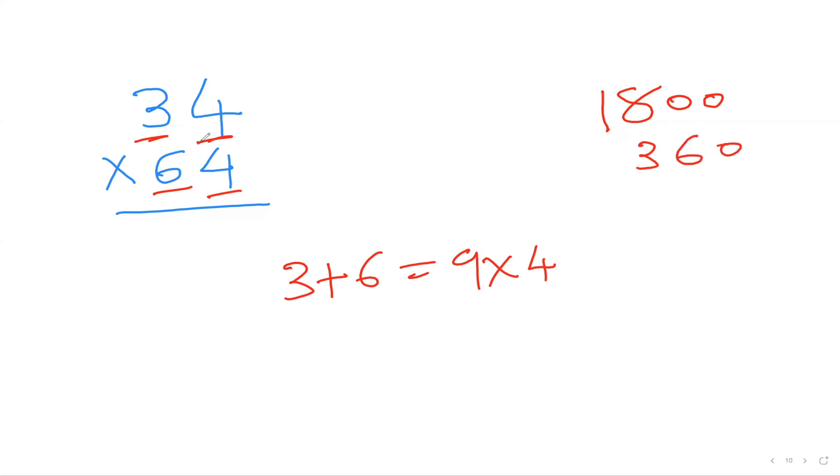And then at the end is four times four is sixteen. So I can put down sixteen here. Then I can add up everything, which is 6, 7, 1, and 2. So 2176 is my answer guys.